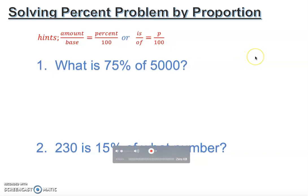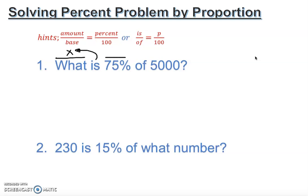Let's look at problem one: 'What is 75% of 5,000?' The 'what' is not known, so that's going to be my X. The percentage is 75, and since percentage means per 100, we put down 75 over 100 right away. The 'of' value is 5,000, so it goes on the bottom as the base. We don't know the 'is' value, so that's X.